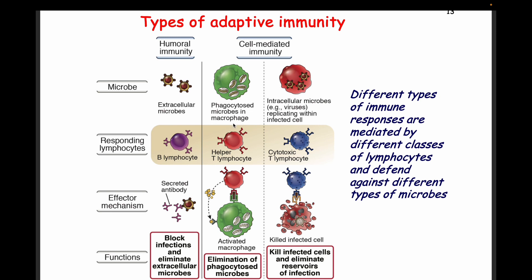Phagocytized microbes in macrophages are processed by antigen-presenting cells (APCs). APCs include three types: dendritic cells, macrophages, and B cells. The antigen is presented to the helper T cell. After activation, the helper T cell produces cytokines and chemokines to activate other cells and initiate an immune response. The cytotoxic T cells recognize a foreign antigen and induce apoptosis in the infected cell using granzymes and perforins. Perforins create channels in the infected cell, and granzymes enter the cell to initiate cell suicide.